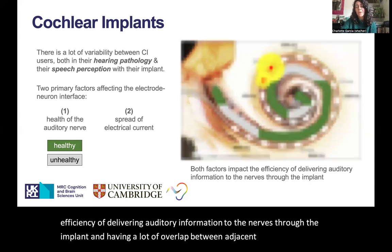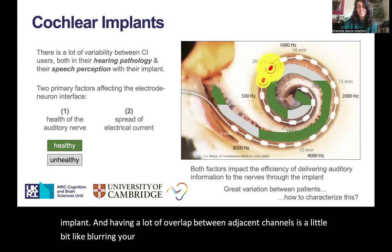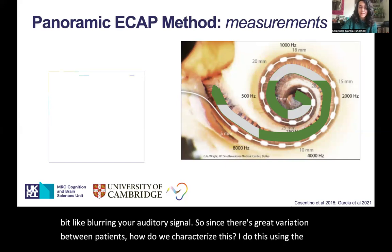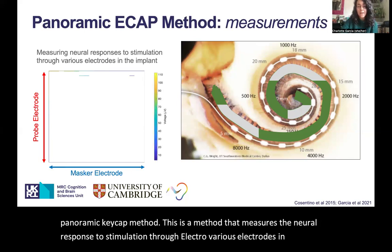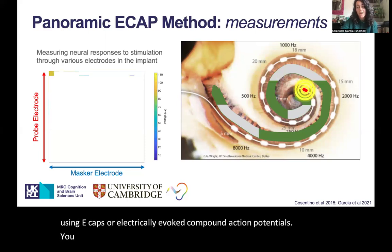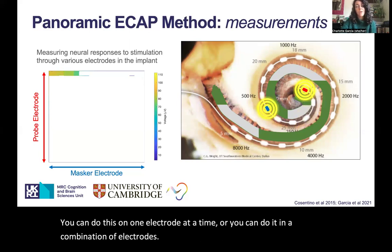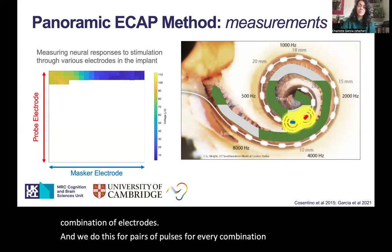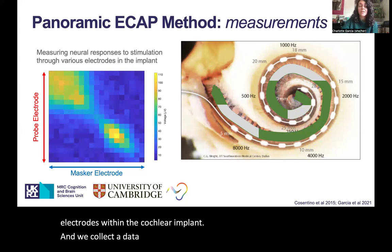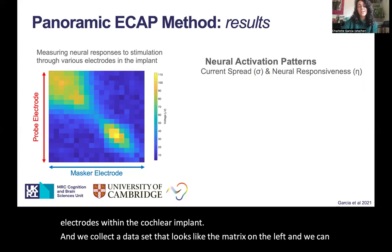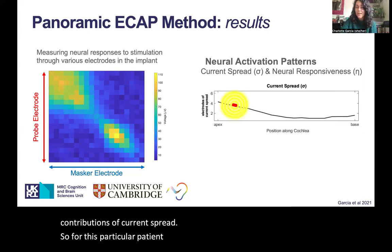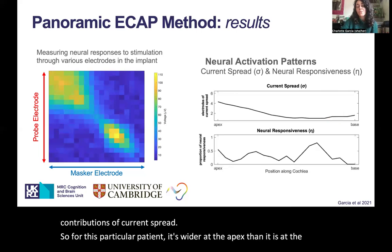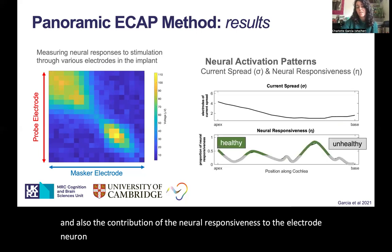Having a lot of overlap between adjacent channels is a little bit like blurring your auditory signal. Since there's great variation between patients, how do we characterize this? I do this using the panoramic ECAP method. This measures the neural response to stimulation through various electrodes in the implant using ECAPs, or electrically evoked compound action potentials. You can do this on one electrode at a time or in a combination of electrodes, and we do this for pairs of pulses for every combination of two electrodes within the cochlear implant. We collect a dataset that looks like the matrix on the left and import this data into an algorithm that estimates the relative contributions of current spread — which for this particular patient is wider at the apex than at the base — and also the contribution of neural responsiveness to the electrode-neuron interface, which can vary along the length of the cochlea.